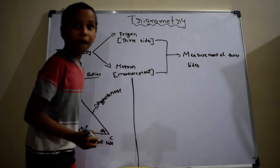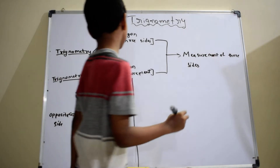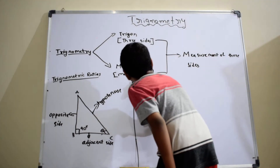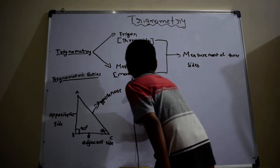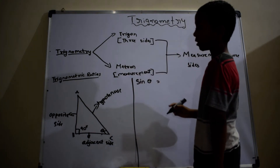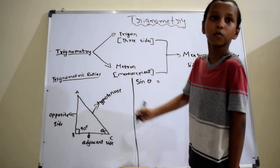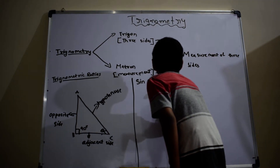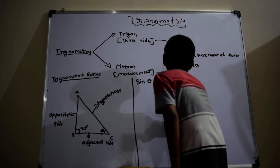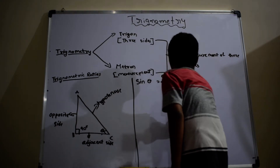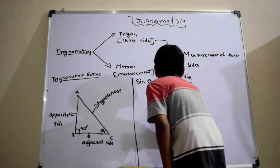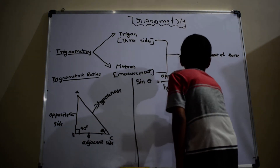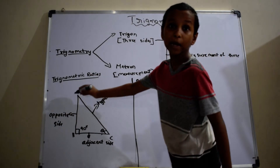Now I am explaining trigonometric ratios. The first ratio is sin theta, which is equal to opposite side by hypotenuse, which is equal to AB by AC.